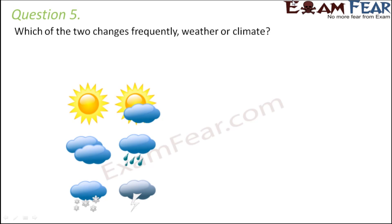Question number five: which of the two changes more frequently — weather or climate? Weather is short-term and changes on a daily basis. In fact, in the same day the temperature and other elements of weather can change within a couple of hours. Climate, on the other hand, is observed over a long period of time. So weather definitely changes more frequently than climate.